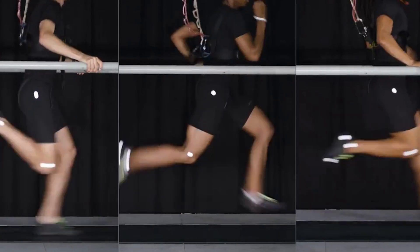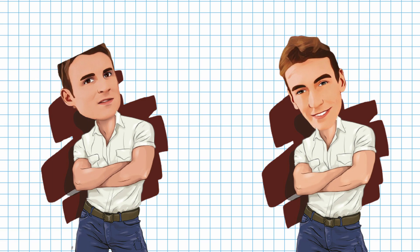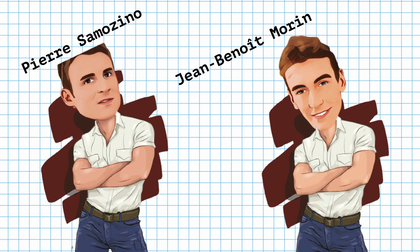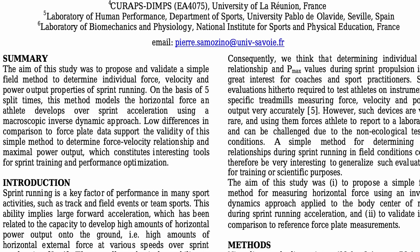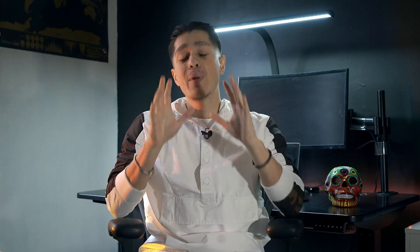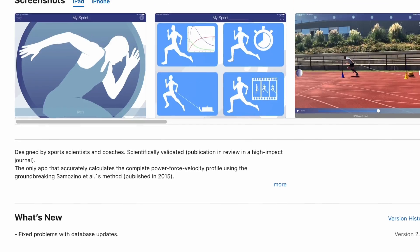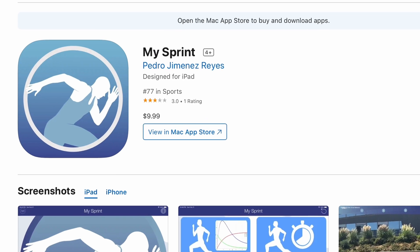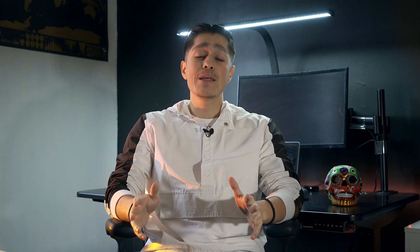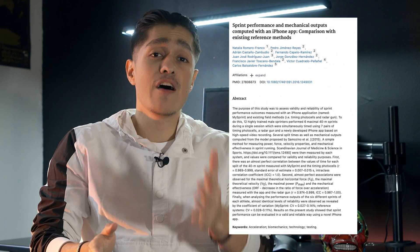Previously, you needed expensive lab equipment to do this assessment. Fortunately, in recent years, researchers have outlined a method that doesn't require much equipment and just uses a mathematical formula. This method is completely free — I'll have a link in the description with the literature, but it does require a bit of work. On the other hand, if you want to skip all that, you can just get the My Sprint app, which does all the work for you. It does cost a few dollars. I'm not affiliated and I don't make any money in any way — the only reason I'm recommending it is because it's already been validated as a reliable way to measure your FVP.